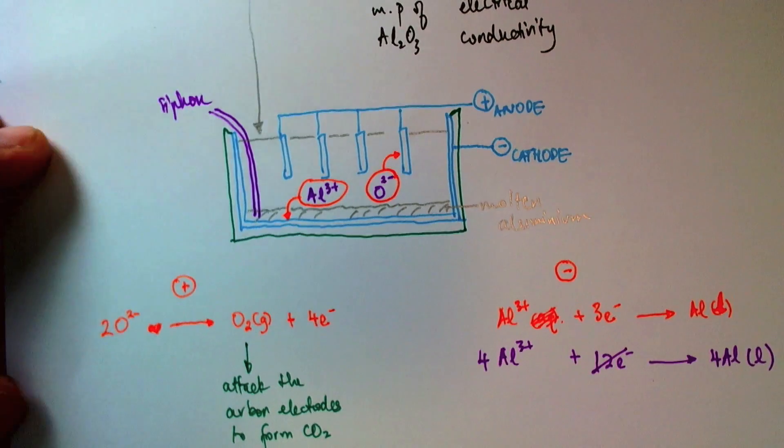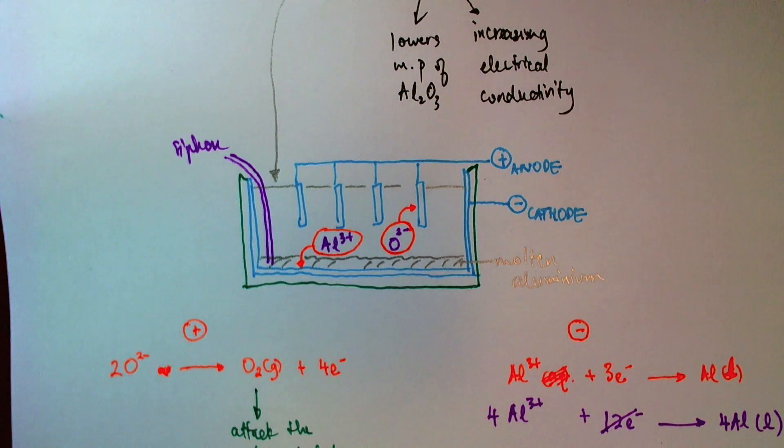So there we have it. This is the process of extraction of aluminum. And in the next video, we will look at a summary of all that we've learned so far in electrolysis.